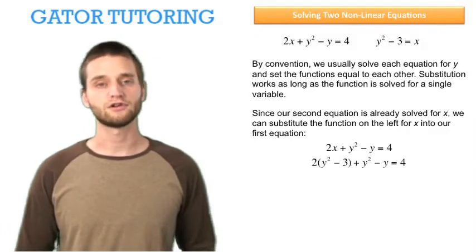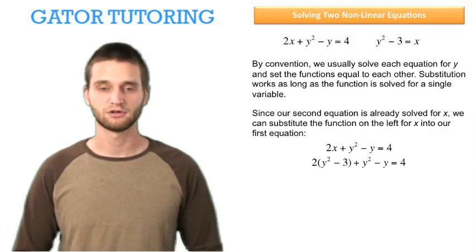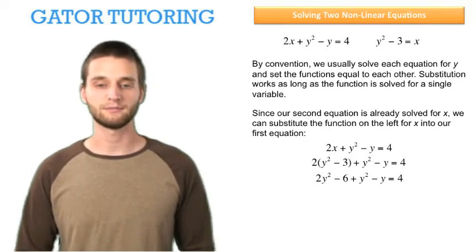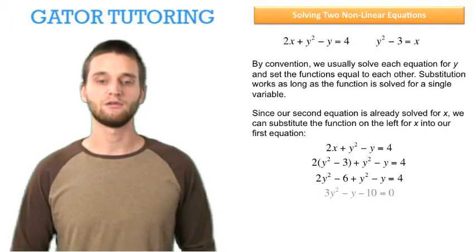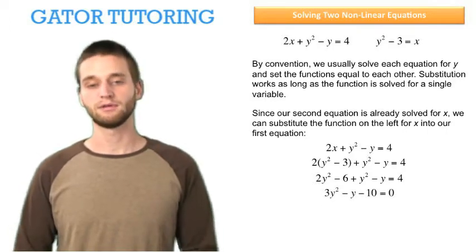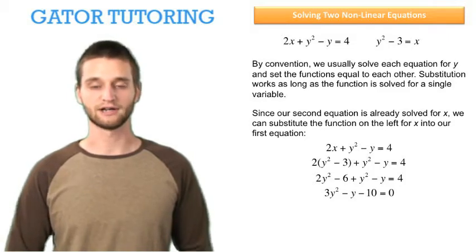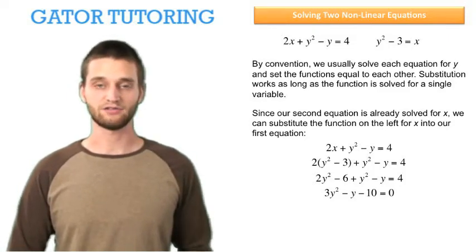This is just another version of the method of substitution. Now we distribute the 2 over the y squared minus 3, and we obtain 2y squared minus 6. Then we combine the 2y squared plus the 1y squared and we get 3y squared. Now we have this quadratic equation with only y in it, so we can solve it.